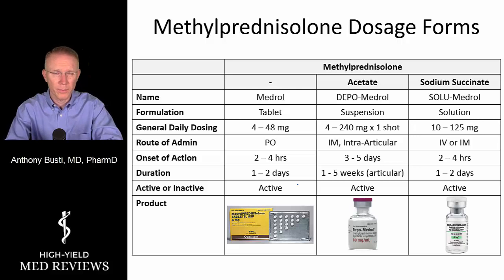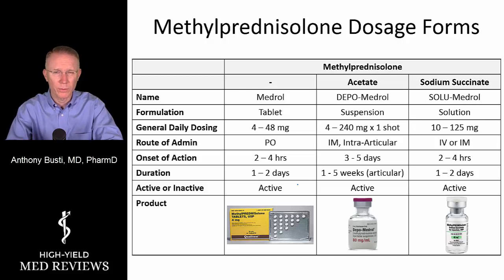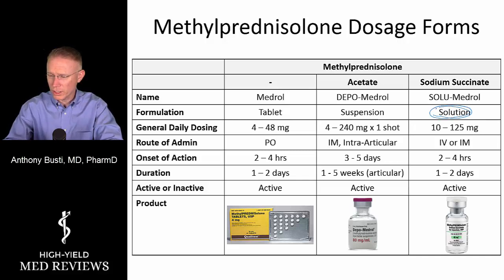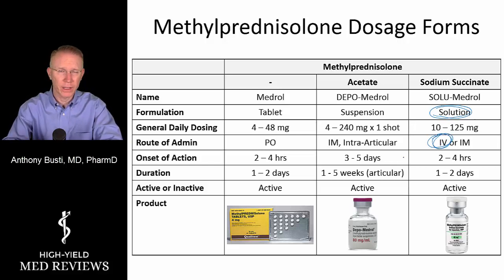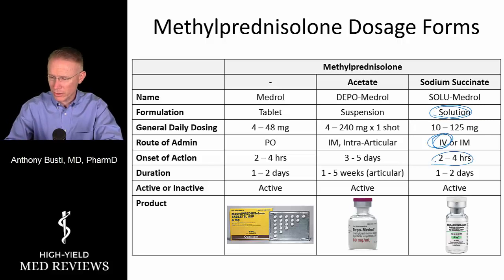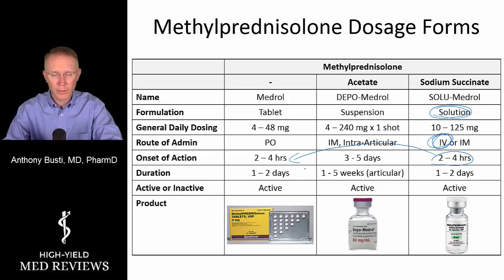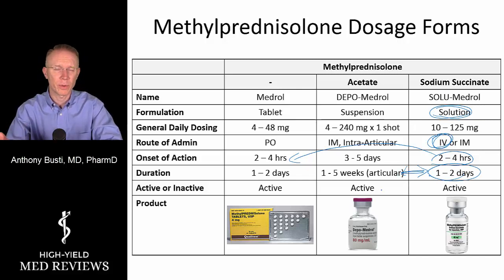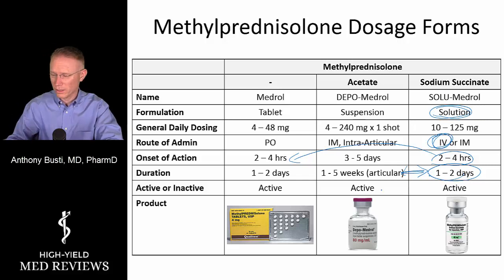The last formulation is methylprednisolone sodium succinate, known as Solu-Medrol, which is more commonly recognized in clinical practice. It is one of the drugs studied in acute pulmonary exacerbation conditions like asthma and COPD. It is a solution, so it can be given both IM and IV — it is the only form that can be given intravenously, whereas methylprednisolone acetate is only IM, intra-articular, or occasionally intralesional. The onset is about 2 to 4 hours but it doesn't last as long as the acetate formulation, only about a day or two, so it requires repetitive dosing.